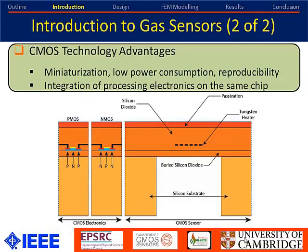What we propose is to develop sensors using CMOS technology. Because the process is very mature, you can get miniaturization, low power consumption, and very good reproducibility. The best feature is that you can get integration of the processing electronics on the same wafer. This schematic shows the CMOS sensor followed by drive and processing electronics sitting on the same wafer next to it.